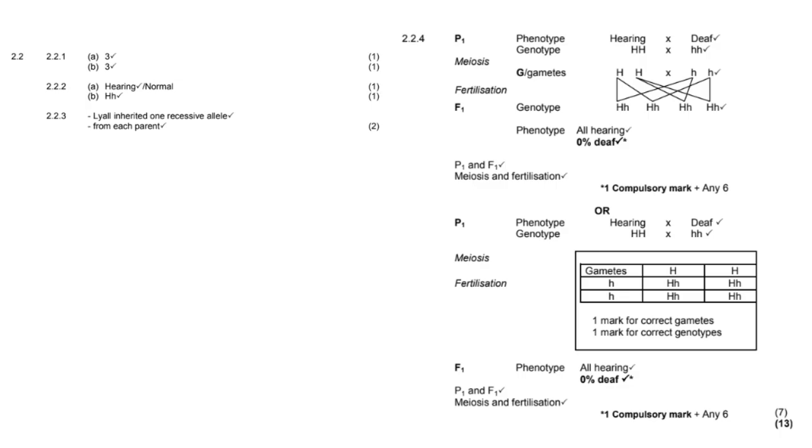Now, here is the memo. So you're more than welcome to go through it and have a closer look at what they have ticked. I just want to bring your attention to 224. That was, of course, the genetic cross. There are two answers here, just so that you know. There is an or. So in other words, you could give either the top option or the bottom option. But again, as you can see, they are 100 percent hearing. So none of them are deaf. So zero percent are deaf. And you've got two ways you can work it out.